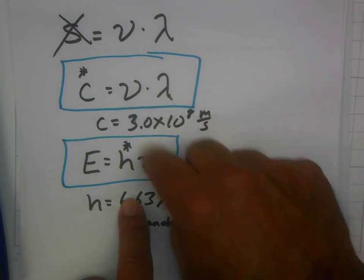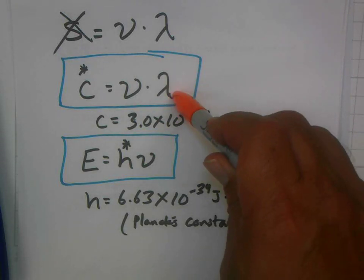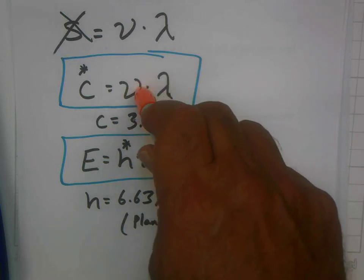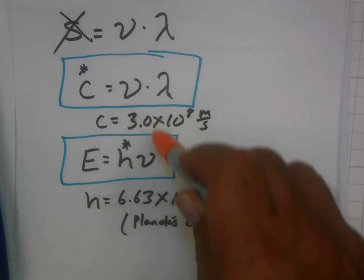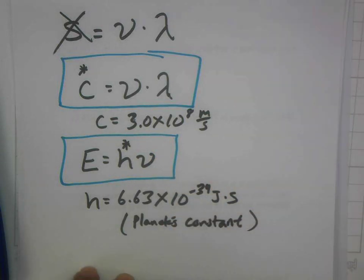So notice that they both have frequency in them. Frequency is the one thing that connects these two equations together. So what we can do is we can plug in our wavelength here, solve for our frequency. Then once we have the frequency, we can plug it into this equation. Okay? So let's go ahead and do that.